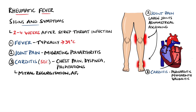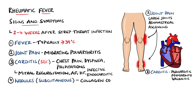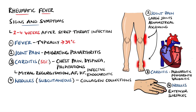Overall, rheumatic fever patients have an increased risk of atrial fibrillation, heart failure, and infective endocarditis. Other potential findings include subcutaneous nodules, which are collections of collagen, found most commonly on the extensor surfaces of the hands, wrists, elbows, and knees.